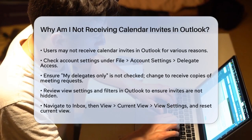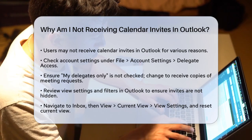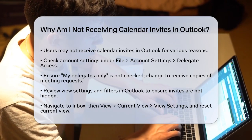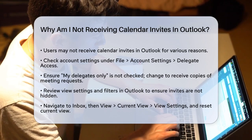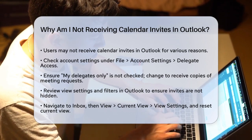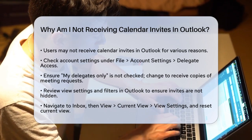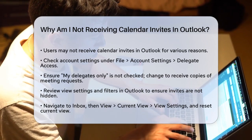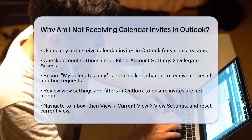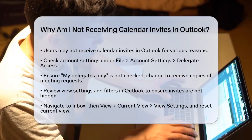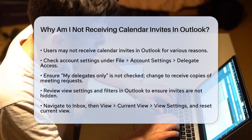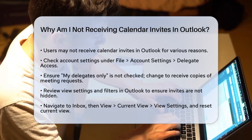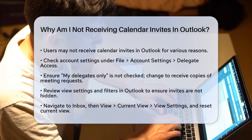First, let's check your account settings. Sometimes the issue could be related to your delegate settings. Go to File, Account Settings, Delegate Access. Make sure the option 'My Delegates Only' is not checked. If it is, change it to 'My Delegates Only, but send a copy of the meeting requests and responses to me.' This ensures you receive notifications for any updates to your calendar invites.